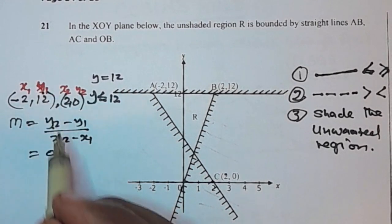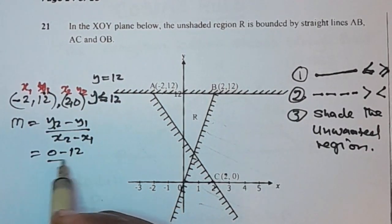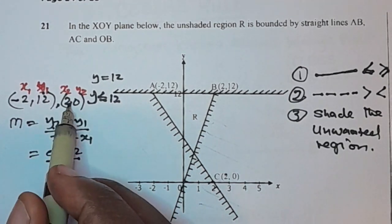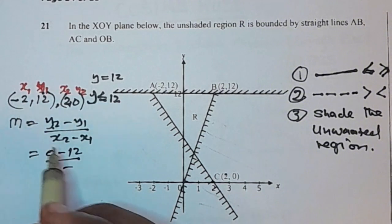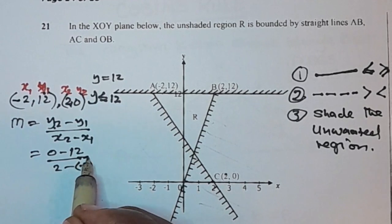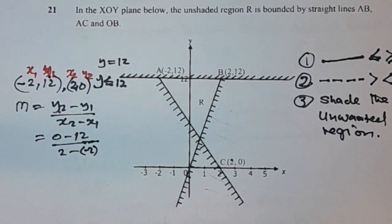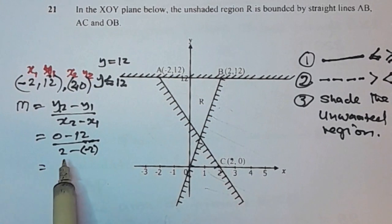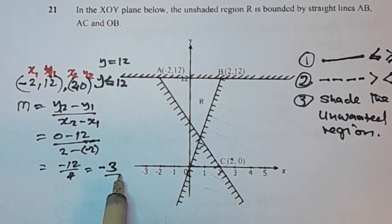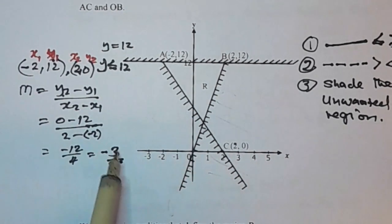So we have: y2 minus y1 is 0 minus 12, which is negative 12, over x2 minus x1 which is 2 minus negative 2, giving positive 4. This gives a gradient of negative 3.